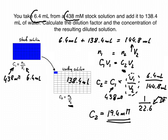Let's quickly check that we've done it the right way. Our working solution is much more dilute, has a far lower concentration than our stock solution, the 438 millimolar here. So therefore we know that we have applied the dilution factor in the right direction. I hope this makes sense and thank you for watching.